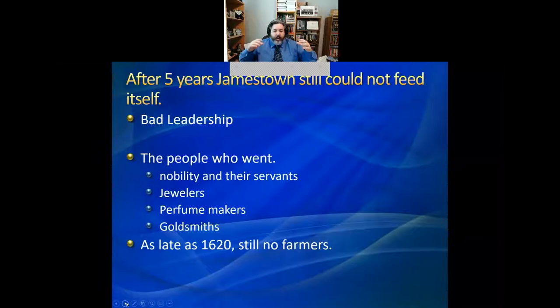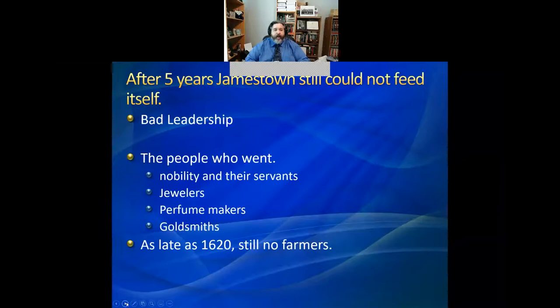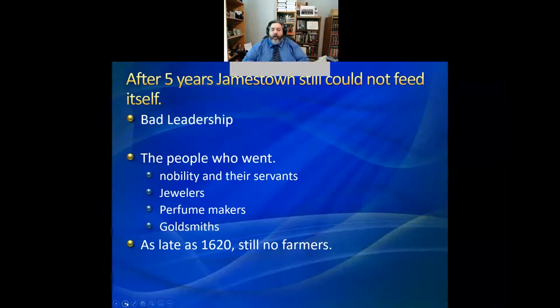Why, after five years, did these people still have no ability to feed themselves? One reason is bad leadership — guys like George Percy were typical. Even when they were actually getting food from the Indians, their leadership hampered those efforts. When you kill Native Americans or kill their wives and children as a way to extract food, they're not going to be particularly interested in helping you. On top of this, these tactics evolved over time so that by the later 1600s, leaders would trade infected blankets — blankets that people with cholera or smallpox had slept in — to Indians as a 'gesture of goodwill' in return for food, wiping them out as a consequence.